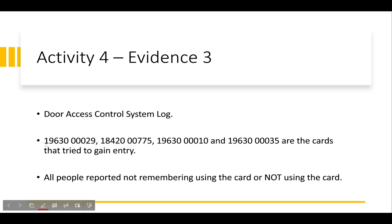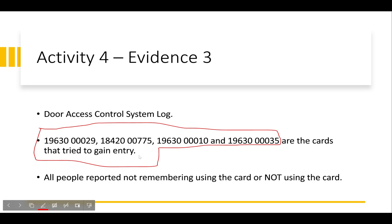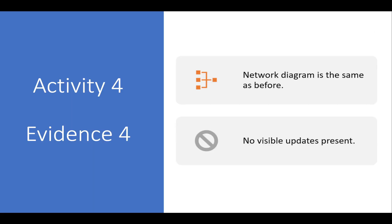Evidence 3 is the door access control system log. Four log entries appeared for card uses that shouldn't have happened at that time. Some people said they don't remember using their card then; others said they definitely did not. No one reported their card as actually missing, which is important — the pickpockets were around, but as far as we know, everyone still had their cards.